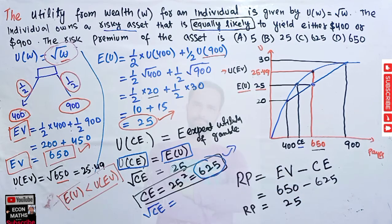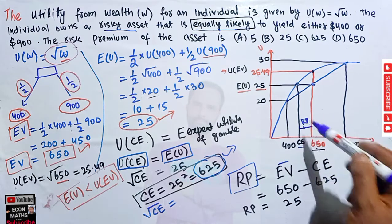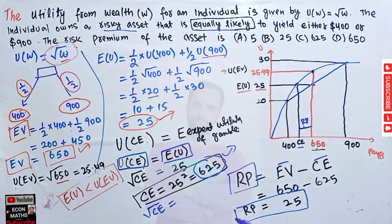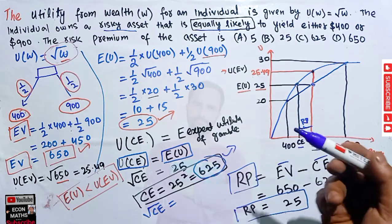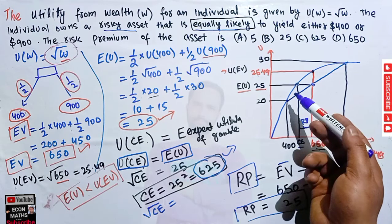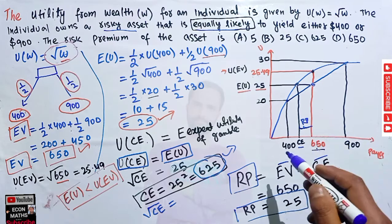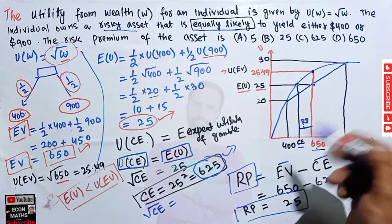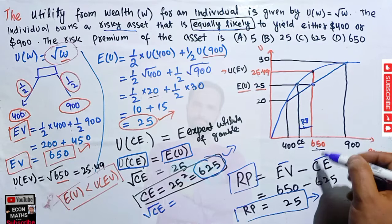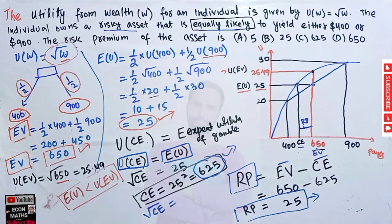The risk premium is simply the difference between the expected value and the certainty equivalent: Risk Premium = E[W] − CE = 650 − 625 = 25. The risk premium is the amount an agent is willing to pay to avoid the risk of a fair gamble — the amount of money the person is ready to forgo in order to avoid the risk. So the risk premium is 25.